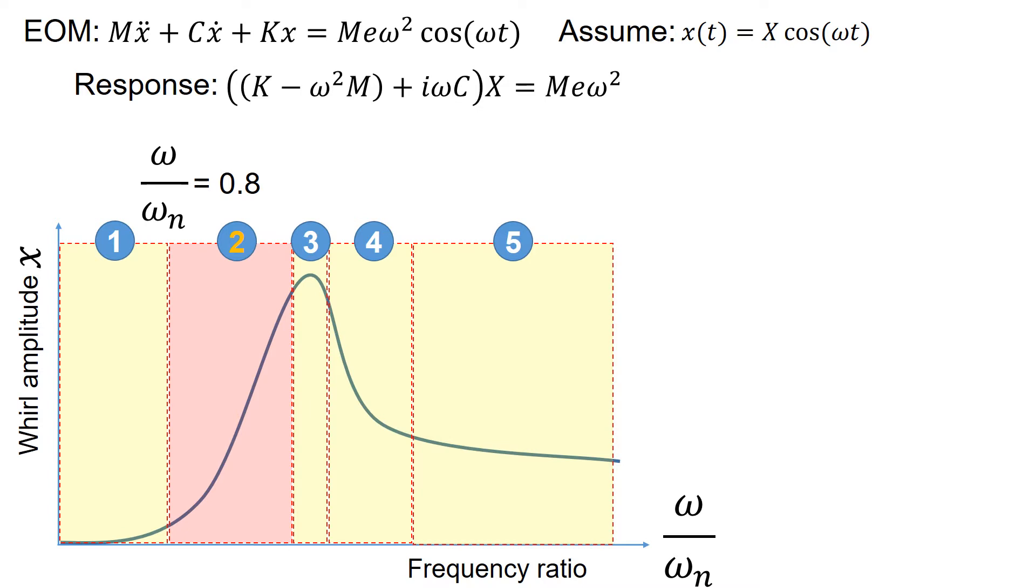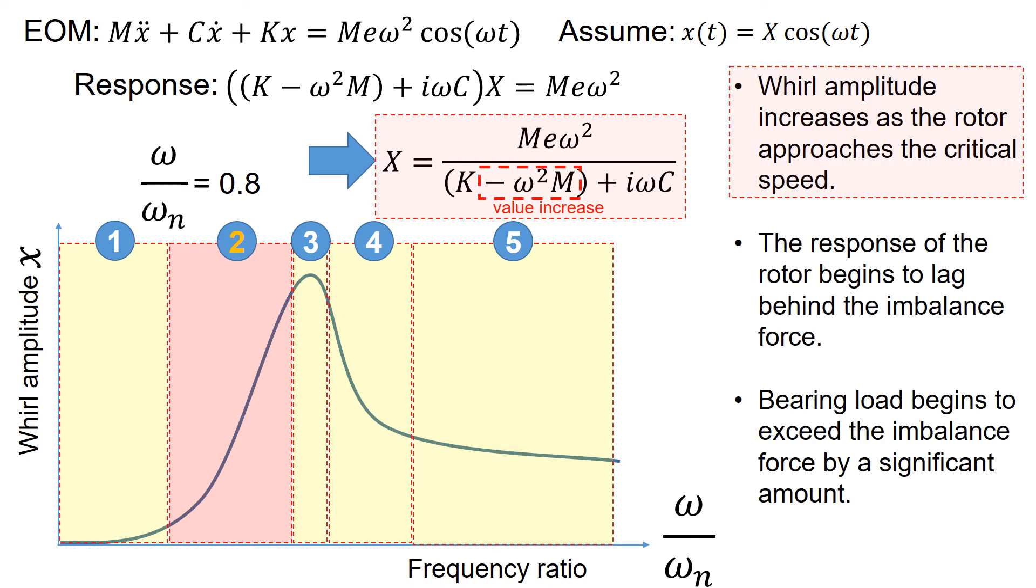Let's move on to the area of interest number 2, where you could say the frequency ratio is about 0.8. At this condition, the equation of rotor amplitude motion is defined in the red highlighted box. As you could see in the figure, the whirl amplitude increases as the rotor approaches the critical speed, because the denominator value in the equations becomes smaller with speed.